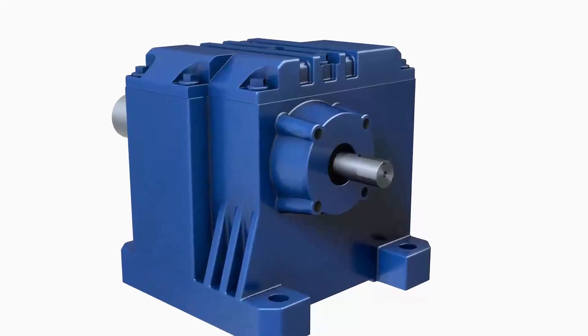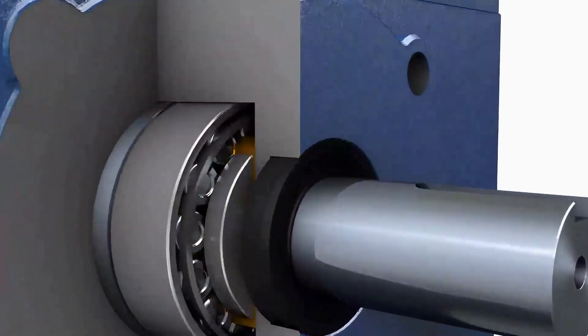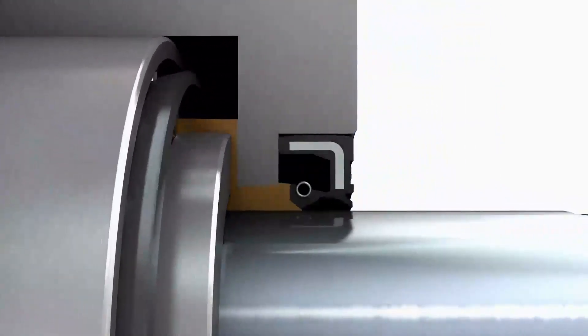To know more about what an oil seal is, you can see in the cross-sectional image of the machine below.